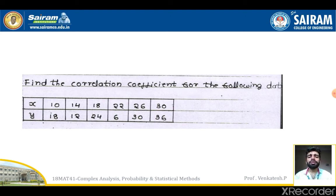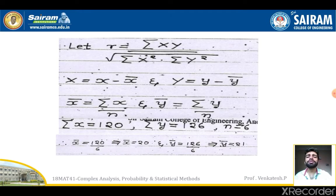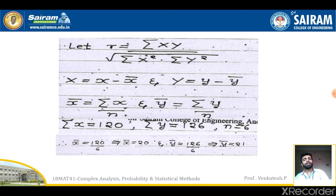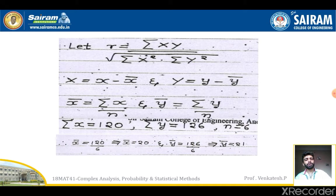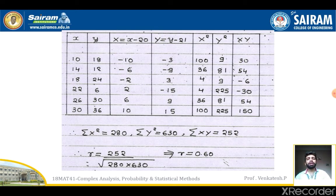One more example: Find the correlation coefficient for the following data. X: 10, 14, 18, 22, 26, 30. Y: 18, 12, 24, 6, 30, 36. Here n = 6. The formula is R = ΣXY / sqrt(ΣX² · ΣY²), where capital X = x − x̄ and capital Y = y − ȳ. Σx = 120, Σy = 126, so x̄ = 120/6 = 20 and ȳ = 126/6 = 21.